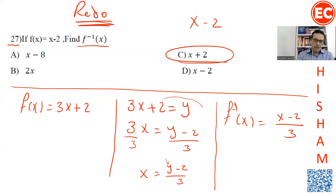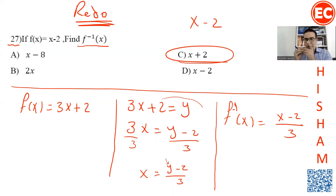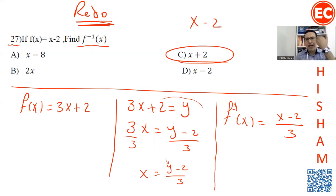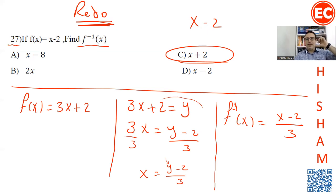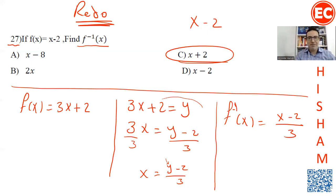If it's two steps — multiplication then addition — you must do four steps: make the equation equal to y, make x the subject, change f(x) to f⁻¹, and change y to x. Alternatively, for 3x plus 2, you can undo it step by step: minus 2, then divide by 3 — giving (x minus 2) over 3.